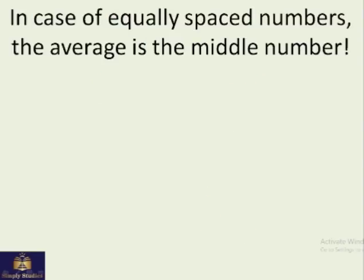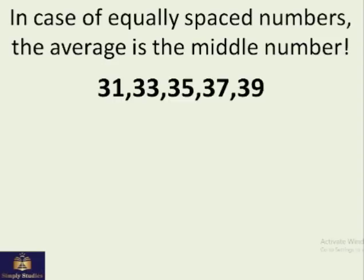Now, in case of equally spaced numbers, the average is the middle number. For example, if you look at these five numbers, 31, 33, 35, 37, 39, all of them are equally spaced. So what should be the average? The middle number. It means 35 is the average.